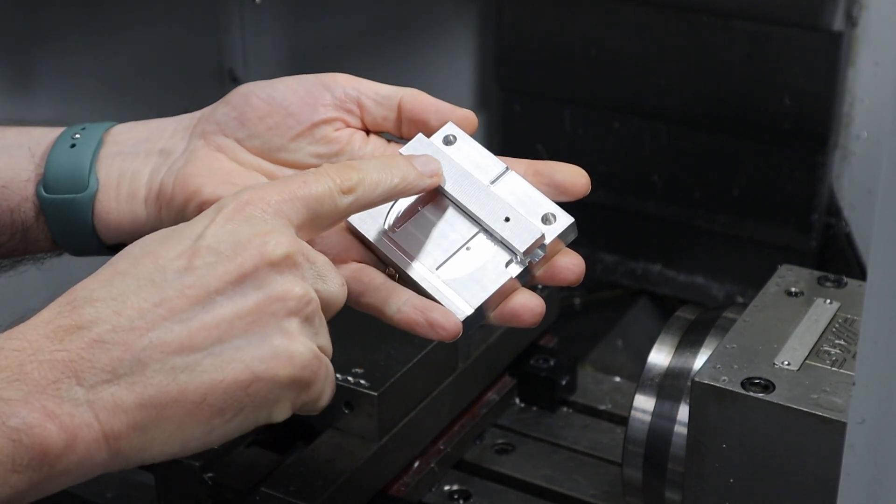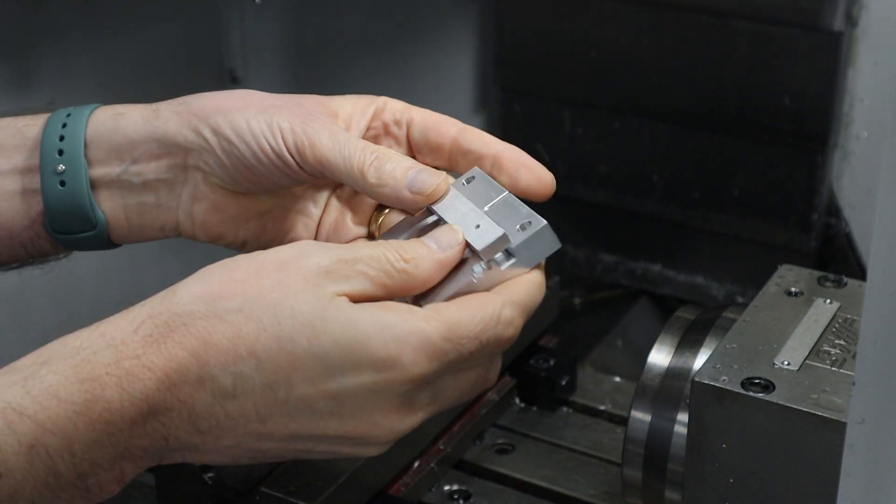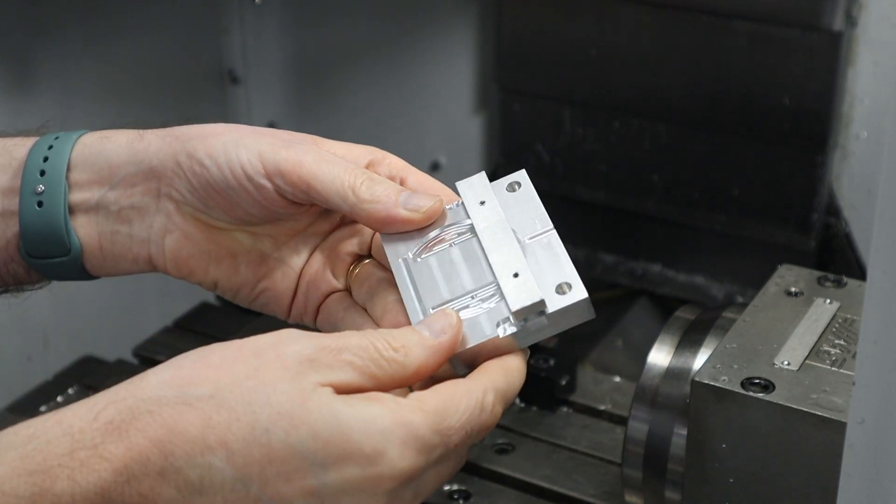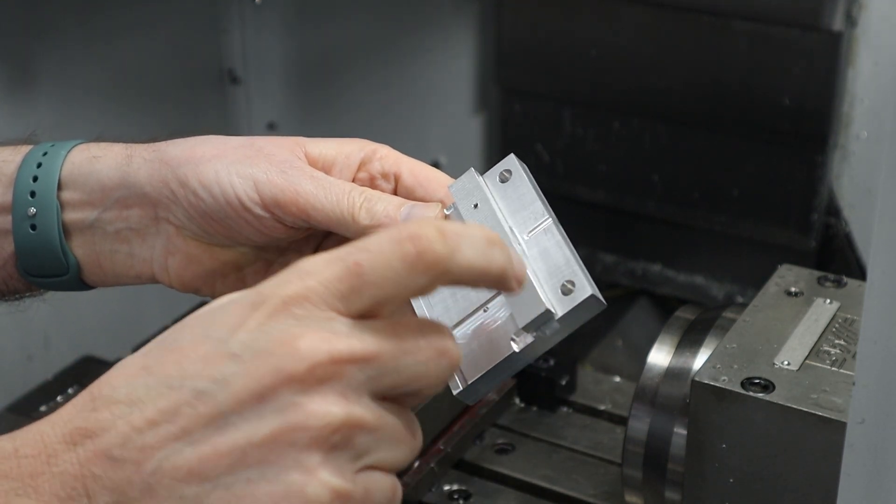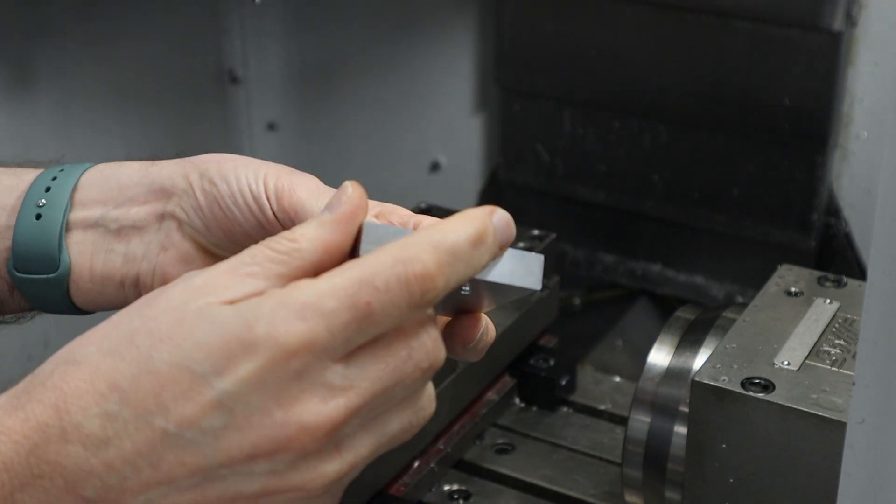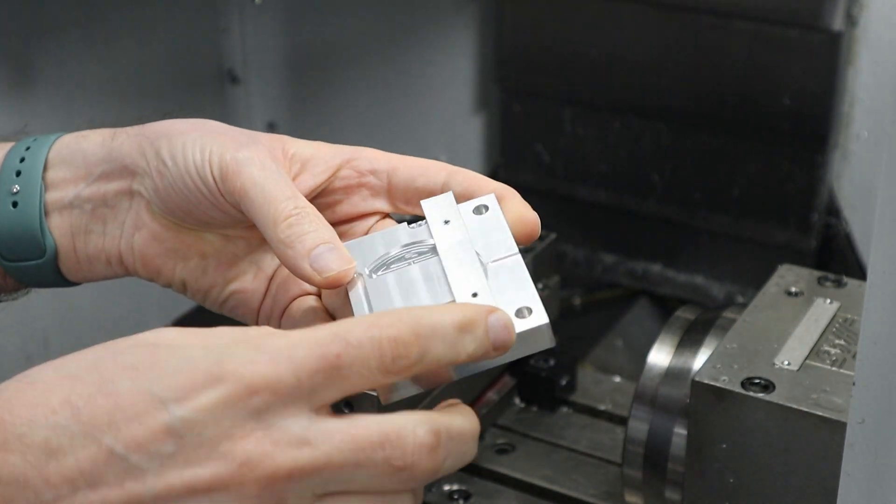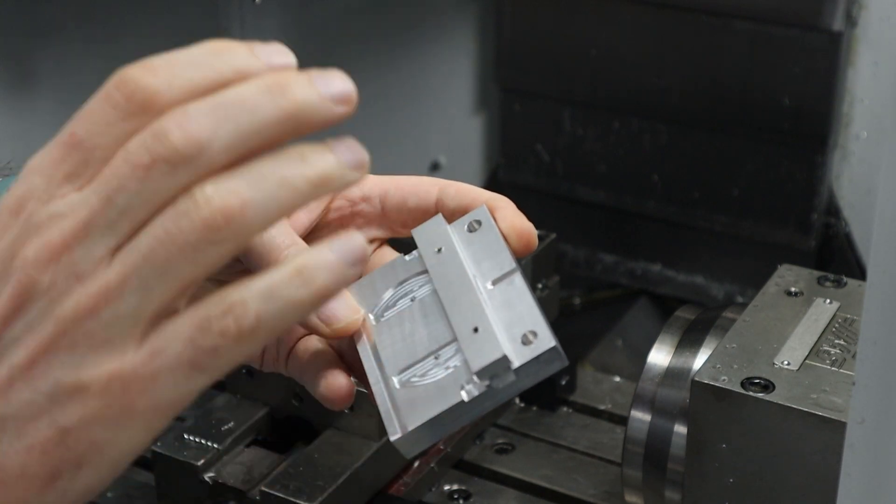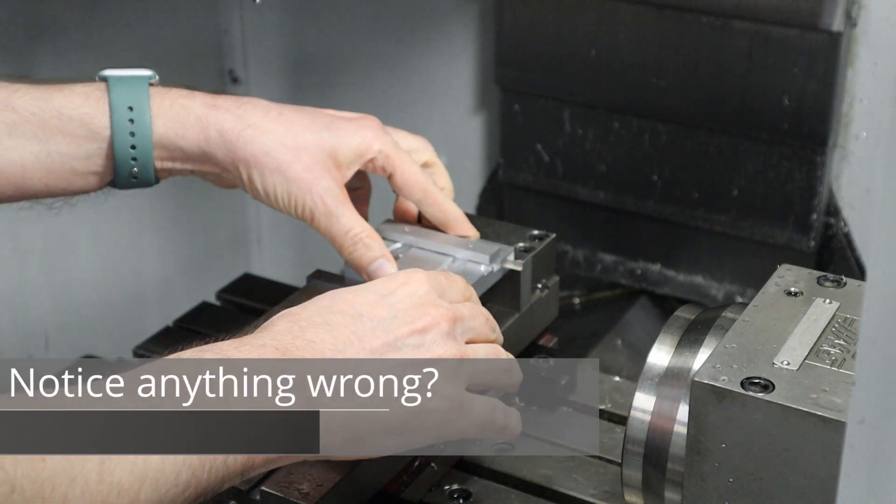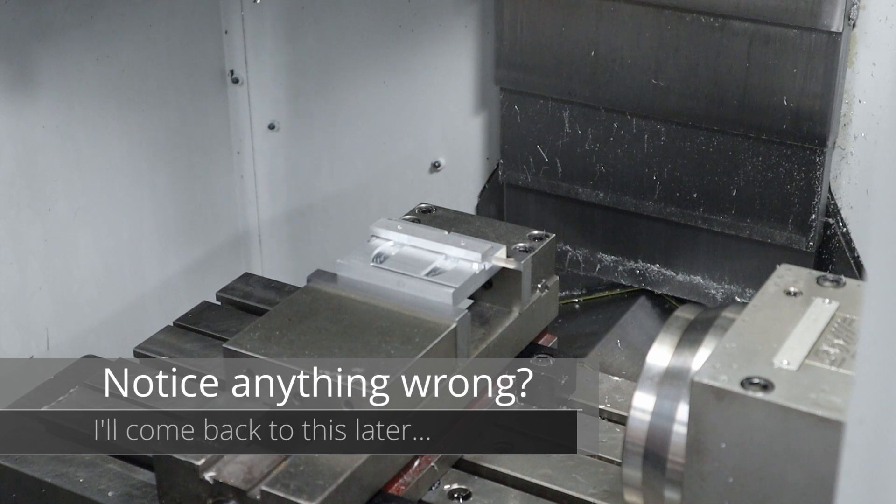I drilled the holes all the way through and then tapped them and then put two screws into the back to hold this into position. I'm not sure how strong this is or how rigid this is. So what I did is I set the programming to cut this to be much less aggressive and we'll see how that works. I'll go ahead and put this in here, clamp it in place, and we'll see how it works.